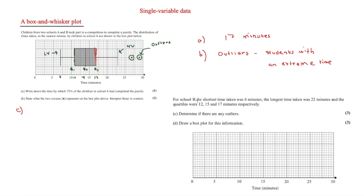For school B, the shortest time was 6 minutes, the longest time was 22 minutes, and the quartiles were 12, 15 and 17 minutes respectively. We need to determine if there were any outliers. To do this we use Q1 minus 1.5 times the interquartile range. Many questions will give you this formula, but it's useful to remember it as it may not always be provided.